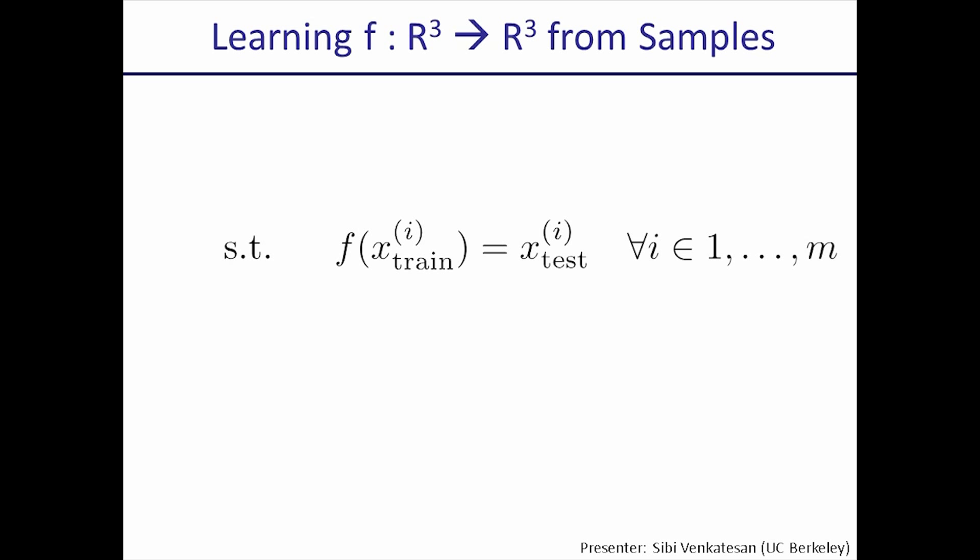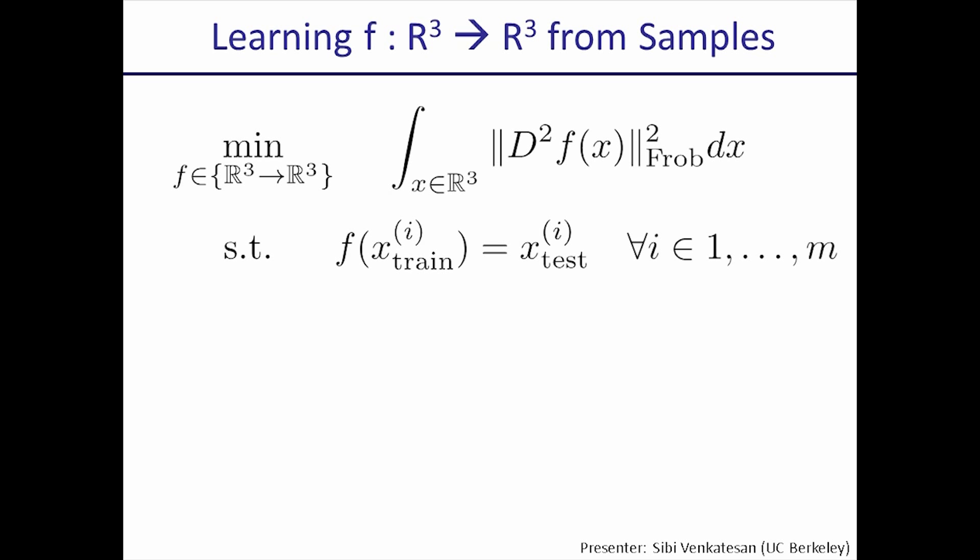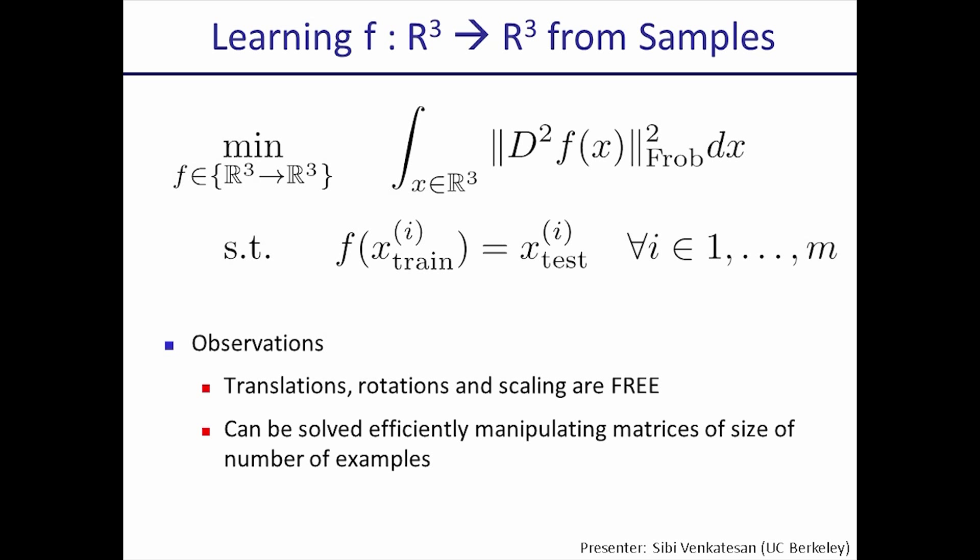In terms of math, we want to respect our registration so that the function matches up the points correctly. But there are an infinite number of functions which satisfy this constraint. We want a reasonable function, and a reasonable choice is one which minimizes an objective — the norm squared of the second derivative of our function, summed over all of space. If that objective goes to zero, we're left with an affine function, meaning translations, rotations, and scalings can be encoded for free. Even though we're searching through an infinite set of functions, we can solve this efficiently by just matrix manipulation.